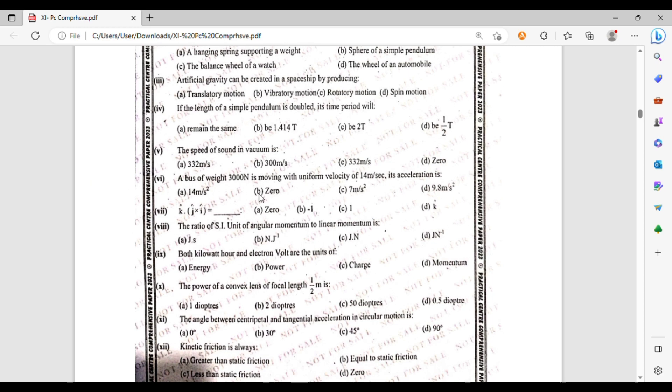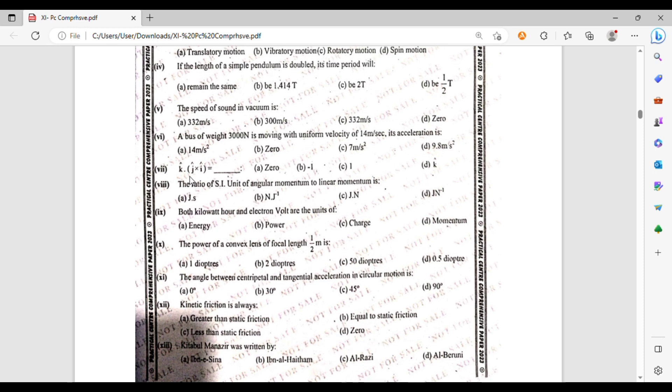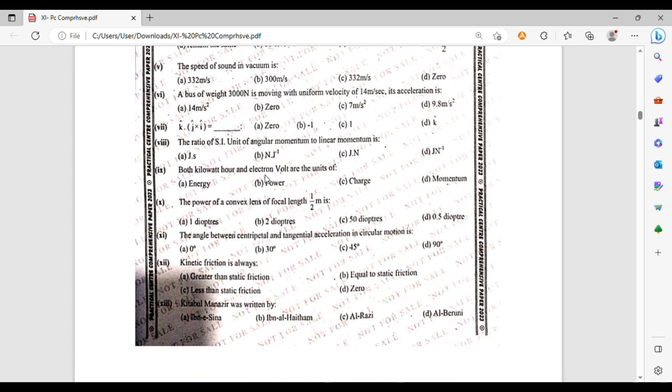A bus of weight 3000 Newton is moving with uniform velocity of 14 meter per second. Its acceleration is 14 meter per second squared, zero, 7 meter per second squared, or 9.8 meter per second squared. K dot J cross I equals zero, minus one, one, or K. The ratio of SI unit of angular momentum to linear momentum is joule per second, Newton, joule inverse, joule-Newton, or joule-Newton inverse. Both kilowatt and electron volt are units of energy, power, charge, or momentum.